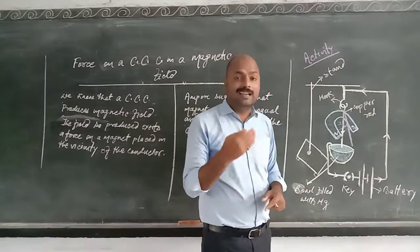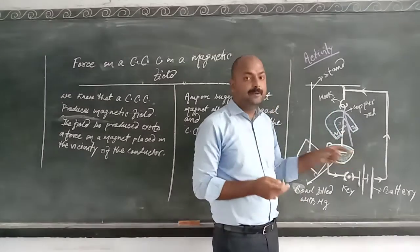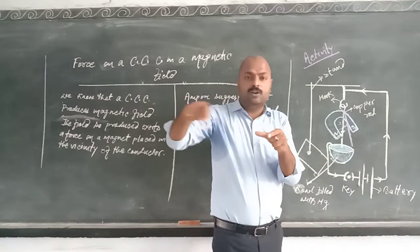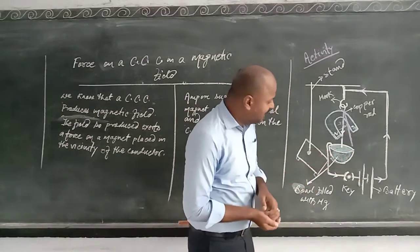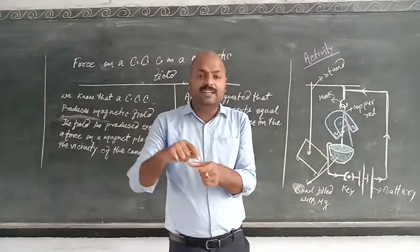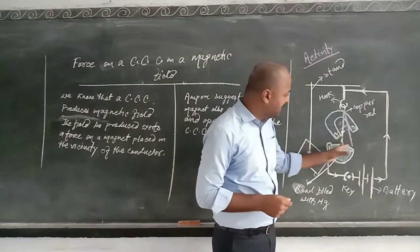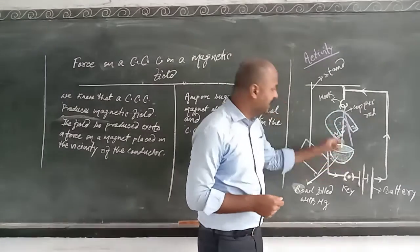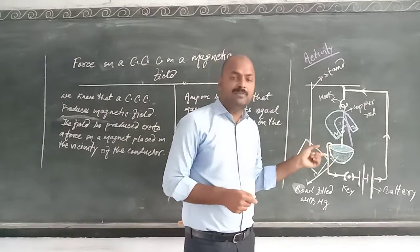Since there is no magnetic field, this copper rod returns back to its original position. When it returns, it once again becomes a closed circuit, producing a magnetic field, and due to the U-shaped magnet it is pushed forward again. As long as we supply electricity through this circuit, it continuously moves up and down. So due to the electrical energy, when placed in a magnetic field, it is converted into mechanical energy.